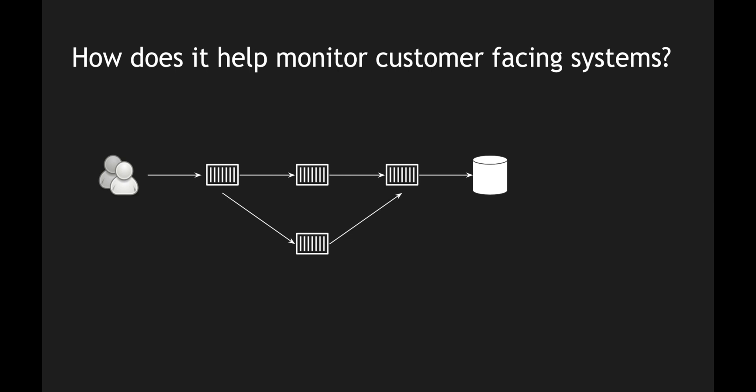The first golden signal to overlay is latency. I need a metric around how much time each individual REST call or network call within the application takes to respond. For example, the first request from the user took 11 seconds, while calls between microservices are like 200ms and 100ms. The stress signal here is the database transaction taking 10 seconds, adding up to the 11-second latency for the consumer. The microservices themselves are only contributing 100–200ms, so I can easily identify where my latency is within my network call.